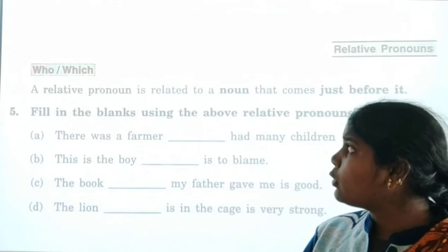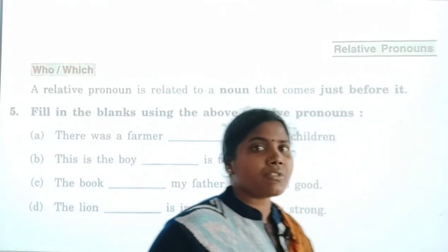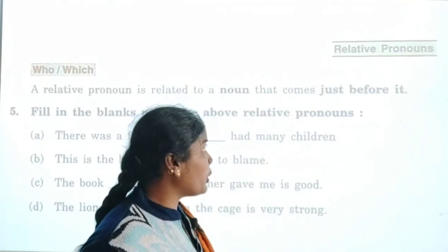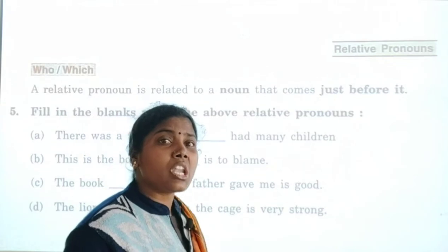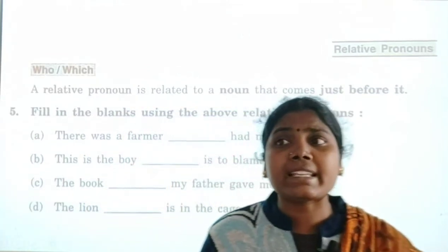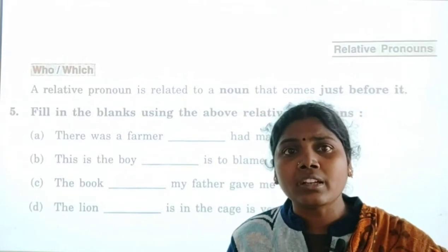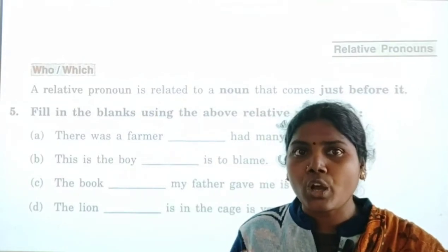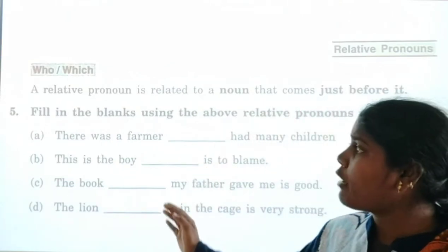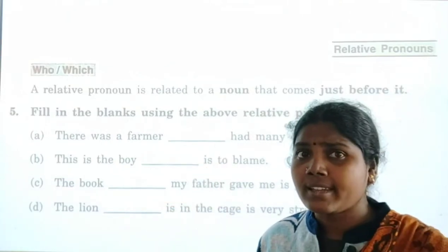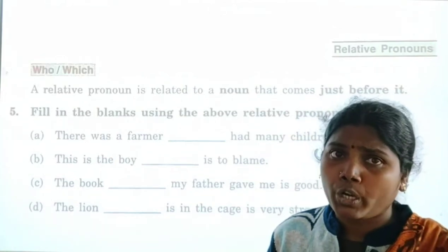The next exercise is 'who/which' — relative pronouns. A relative pronoun is related to the noun. We write the relative pronoun before the noun. Here we have four sentences, and we are going to write the relative pronouns in each.